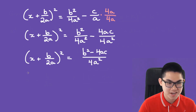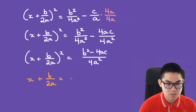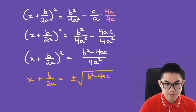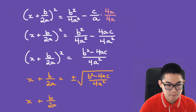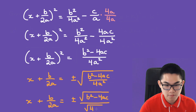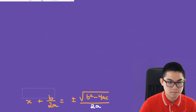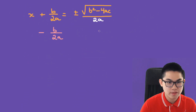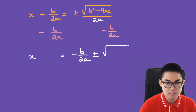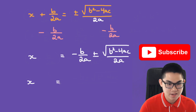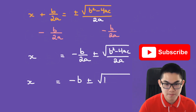We take the square root on both sides of the equation. So x plus b over 2a is equal to plus and minus the square root of b squared minus 4ac over 4a squared. We keep the top the same — b squared minus 4ac — and the denominator is the square root of 4a squared, which is just 2a. We subtract b over 2a from both sides, giving x is equal to negative b over 2a plus and minus the square root of b squared minus 4ac over 2a. The denominators are the same, so we bring them together: x is equal to negative b plus and minus the square root of b squared minus 4ac, all over 2a. And this is our quadratic formula.